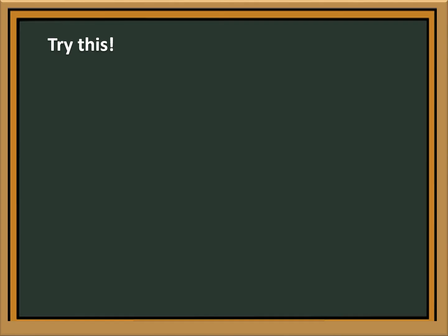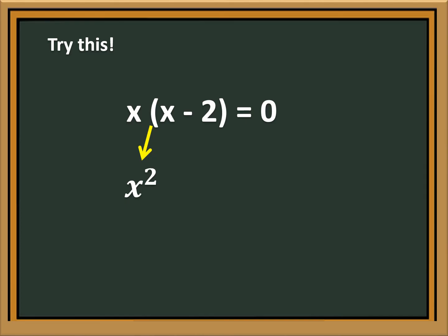Try this: x quantity x minus 2 is equal to 0. Is it a quadratic equation? First, multiply x by x minus 2. x times x is x squared, and x times negative 2 is negative 2x. Is it a quadratic equation? Yes, because the highest exponent of x is 2.